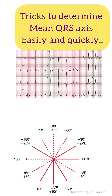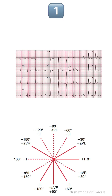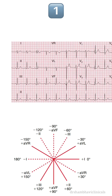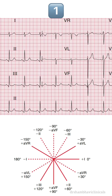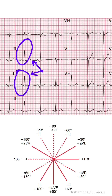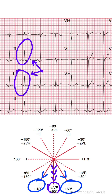Now, trick number 1 to find the mean QRS axis. In an ECG, if you find two tall R waves of equal height, then the mean QRS axis points simply midway between these two leads.